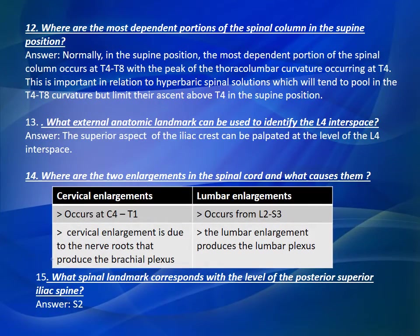Question Number 12: Where are the most dependent portions of the spinal column in the supine position? Answer: In the supine position, the most dependent portion of the spinal column occurs at T4 to T8, with the peak of the thoracolumbar curvature occurring at T4. This is important in relation to hyperbaric spinal solutions, which will tend to pool in the T4 to T8 curvature but limit the ascent above T4 in the supine position.